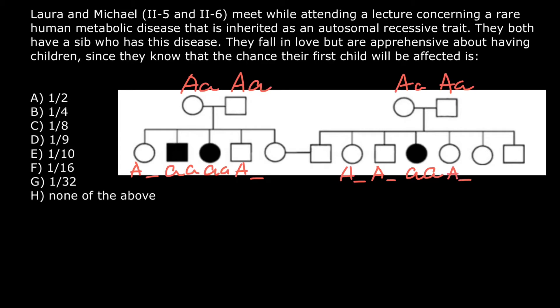So we put capital A in the blank space to show that the second allele can be anything. Now let's calculate the probability that Laura (2.5) and Michael are going to be heterozygous. If they are both heterozygous, they may have an affected child. Let me place this child of unspecified sex here, because this is not a sex-linked genetic disorder but an autosomal recessive genetic disorder. And if both of them are going to be heterozygous, we can predict the probability.